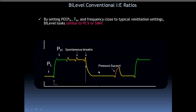Before we talk about airway pressure release ventilation or inverted ratio ventilation, we have to remind ourselves about BiPAP. BiPAP is formed of two levels of CPAP: one high level of CPAP and another low level of CPAP. At the high level of CPAP the patient can take inspirations, and also at the lower level.